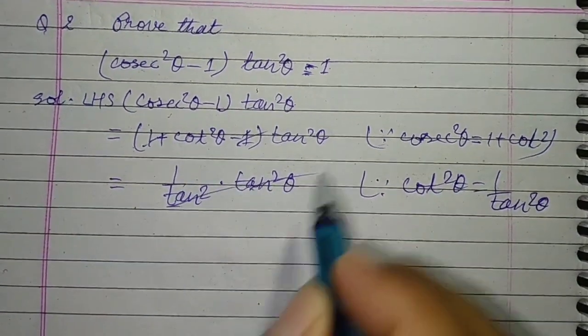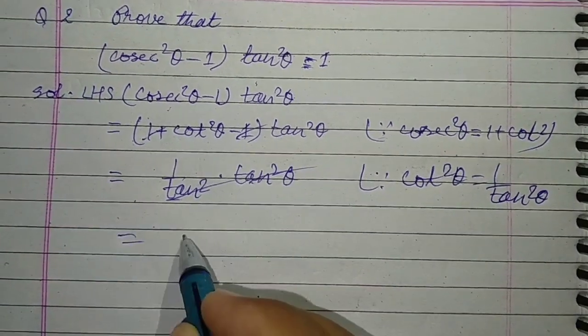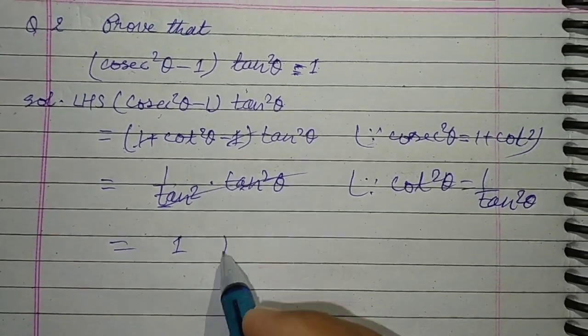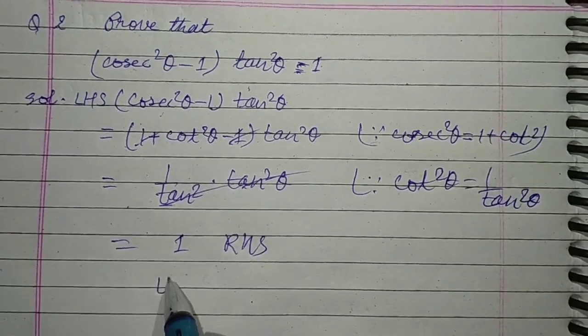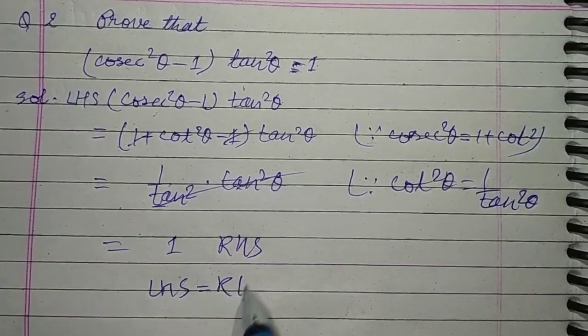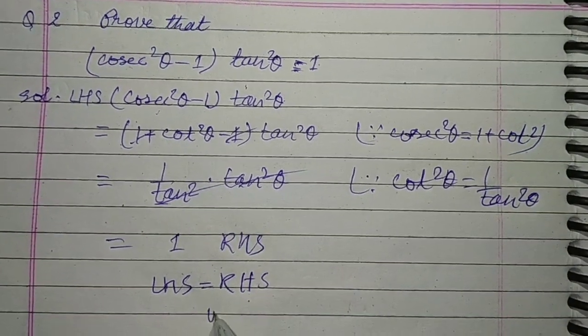tan²θ and tan²θ cancel out. So we have 1, which is RHS. LHS is equal to RHS. Hence, verified.